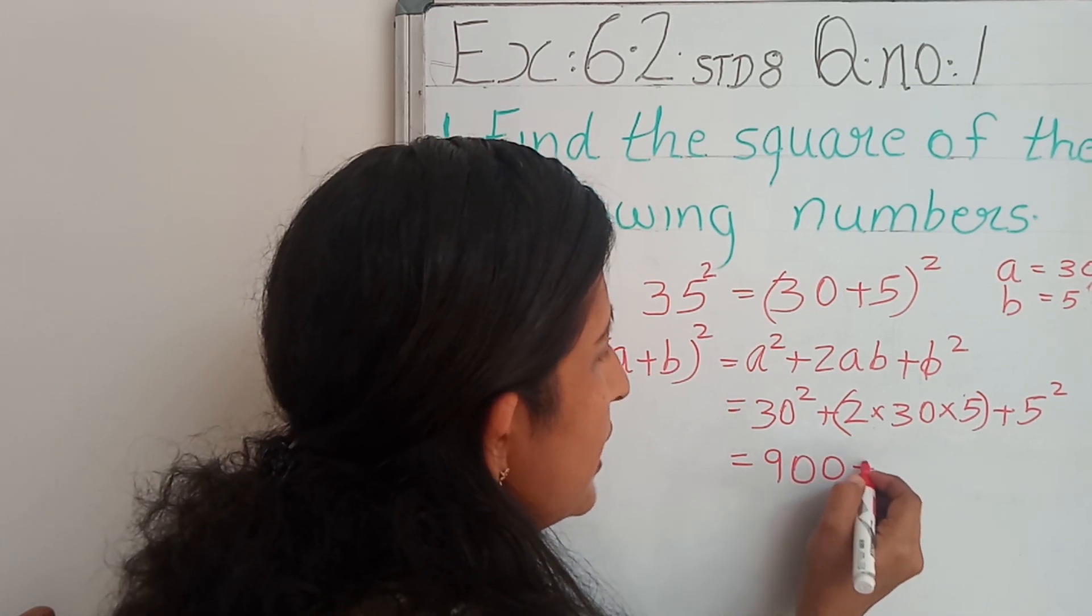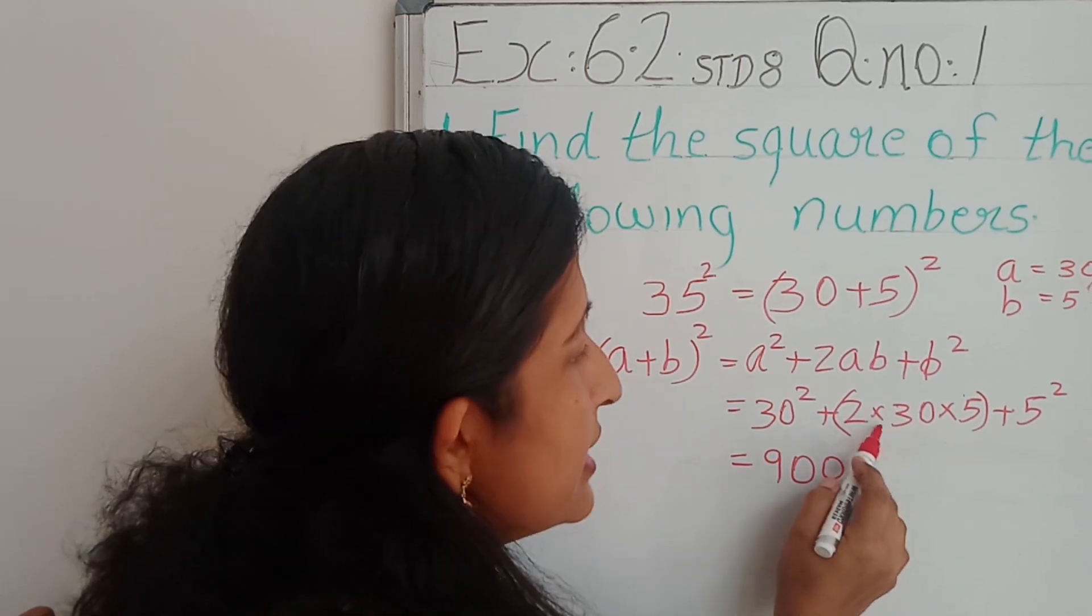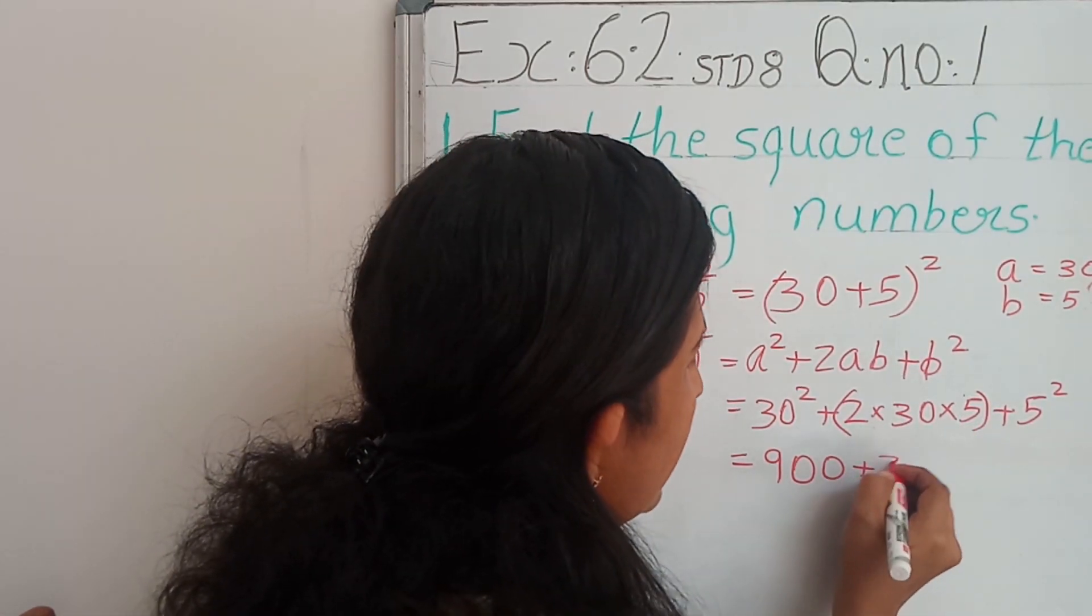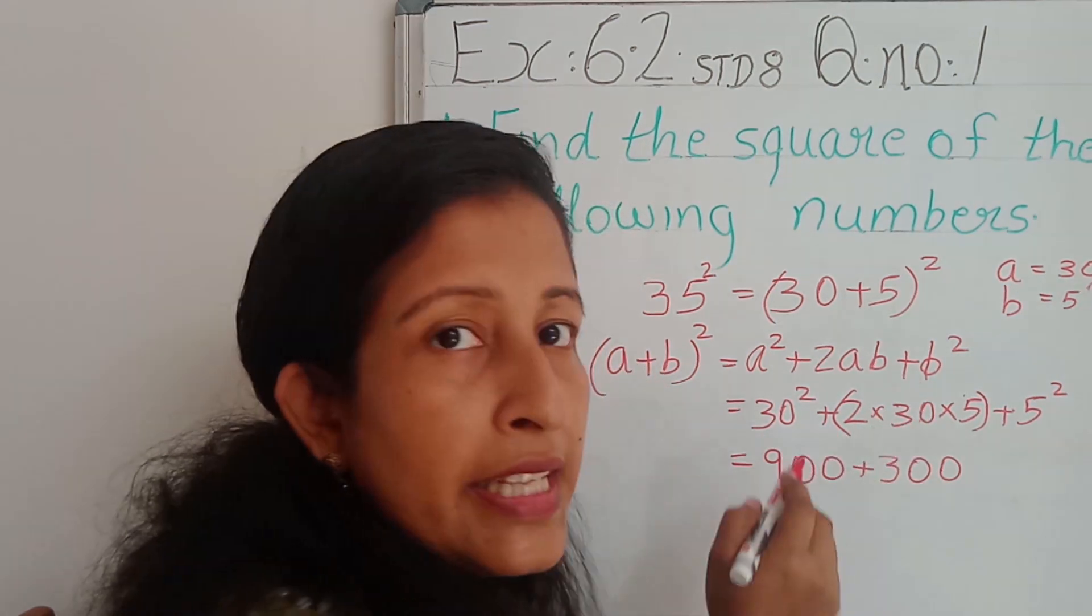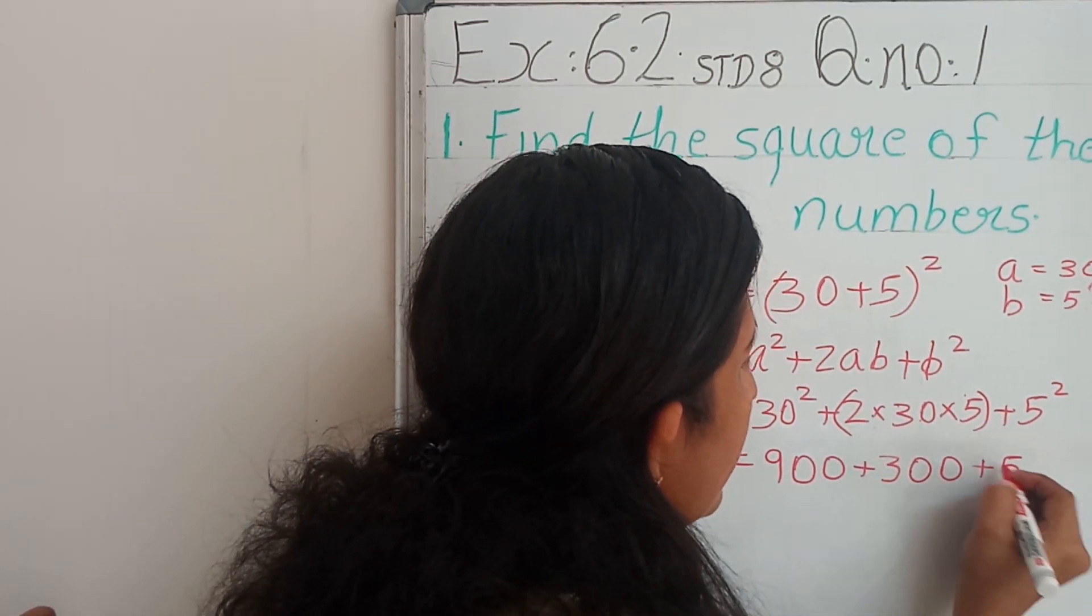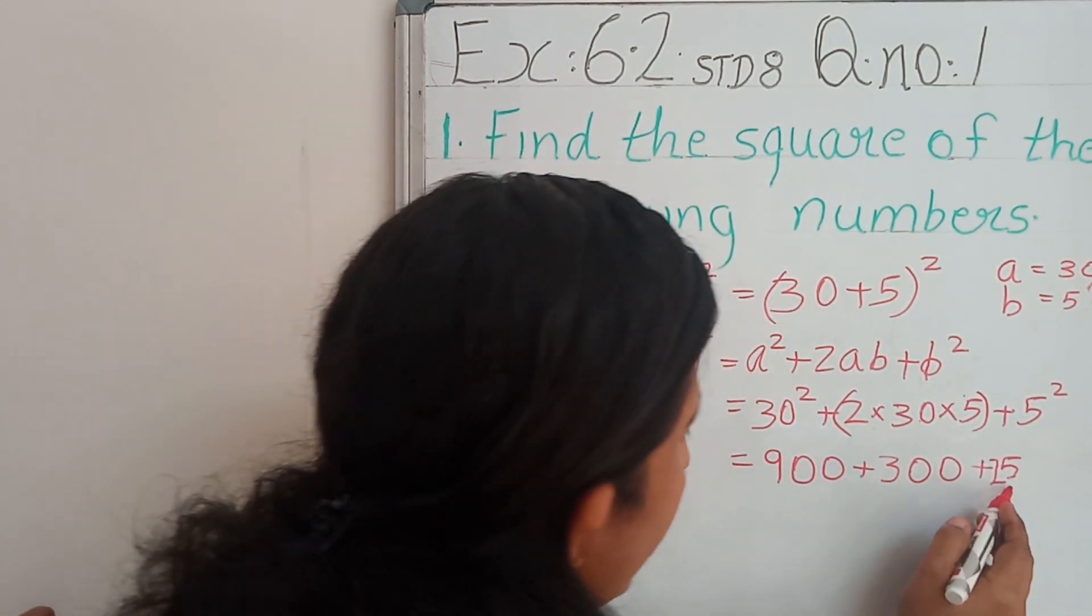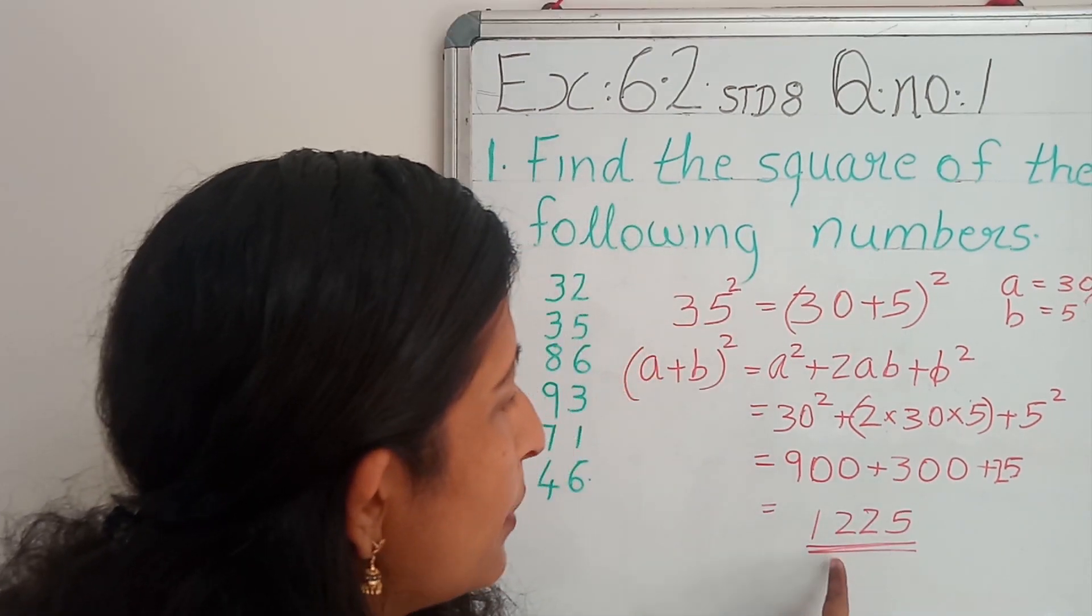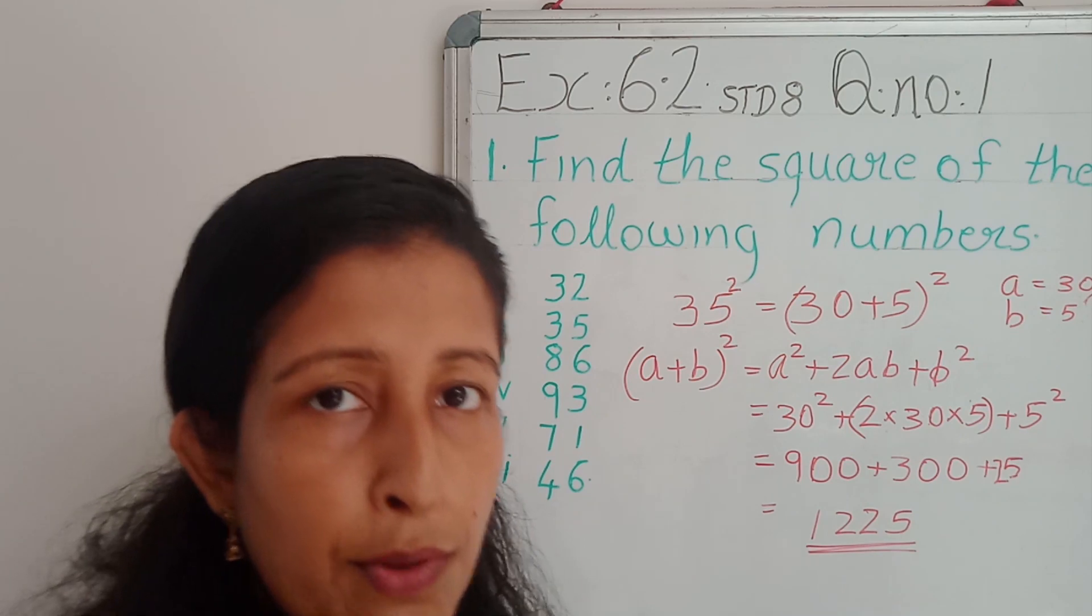Then add 2 zeros plus 2 into 30 into 5, 2 into 3, 6, 6 into 5, 30. Then add 1 more 0, 0 we got from the number 30 plus 25, 5 square. 5 square is 25. 5 square is 25. Then add 1. So, 1225 is the answer of 35 the whole square.